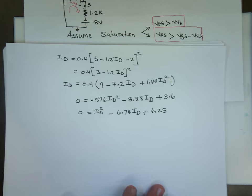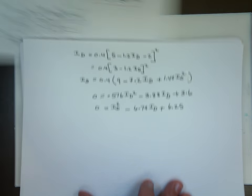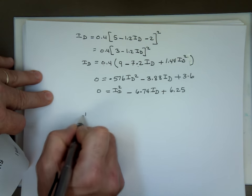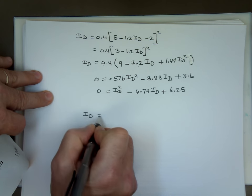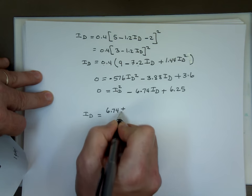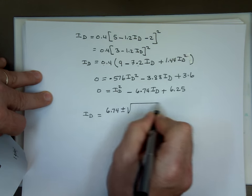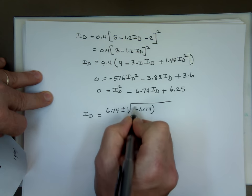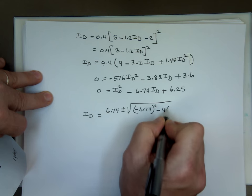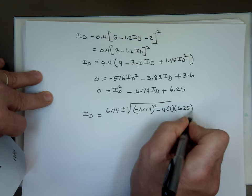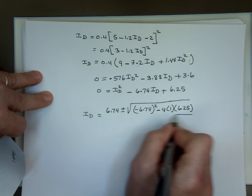3.88 divided by 0.576. I'm not going to carry all the digits. I'll just round it up. 6.74 I sub D plus what's 3.6 divided by 0.576, 6.25. And now we've got to solve for I sub D. Quadratic equation. Minus B. 6.74 plus or minus the square root of B squared. Minus 4 times A times C. Divided by 2 times A.